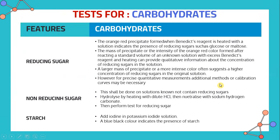Test for carbohydrates. For reducing sugars, an orange precipitate forms when Benedict's reagent is heated with a solution, indicating the presence of reducing sugars such as glucose or maltose. The mass of precipitate or the intensity of the orange-red colour formed after reacting a standard volume of an unknown solution with excess Benedict's reagent and heating can provide qualitative information about the concentration of reducing sugar. A larger mass of precipitate or more intense colour often suggests a higher concentration, though for precise quantitative measurement, additional methods or a calibration curve may be necessary.